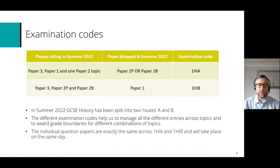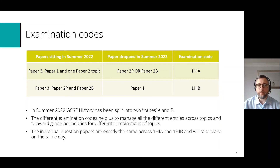Because of all these differences in the topics being dropped, we've had to set up the specification into two routes — A and B. Students who are dropping either the paper 2 period study or the paper 2 British Depth study are entered for route A, which has an examination code of 1HIA. Students who are dropping paper 1, the thematic study, are entered for examination code 1HIB. These different codes help us manage the different entries and award grade boundaries, but the individual question papers are exactly the same across routes A and B and take place on the same day.